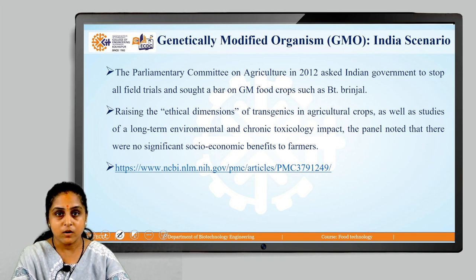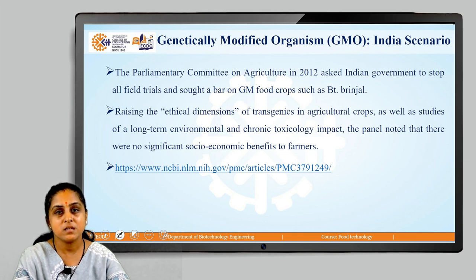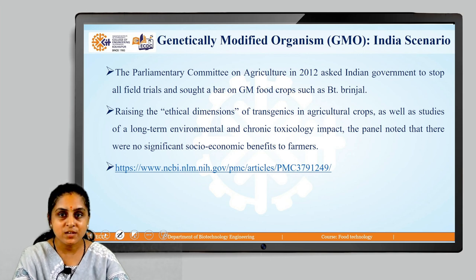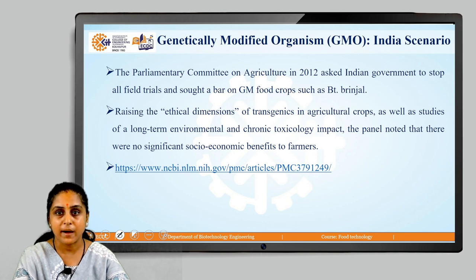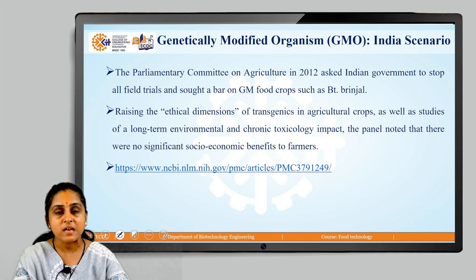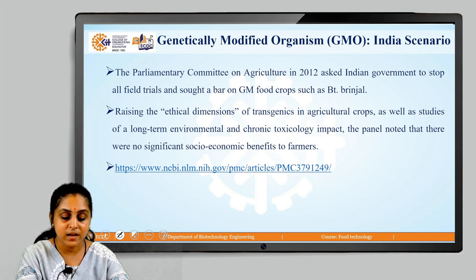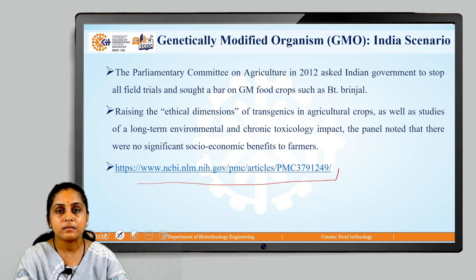The parliamentary committee on agriculture in 2012 asked the Indian government to stop the field trials and sought a bar on genetically modified food crops such as Bt-Brinjal. This raised ethical dimensions of transgenics in agricultural crops, as well as the studies of long-term environmental and chronic toxicology impact. The panel noted that there were no significant socio-economic benefits to farmers. For details on the Indian and global scenario, I suggest you refer to the linked article on PubMed.